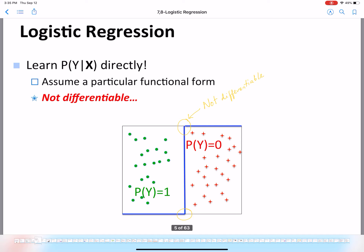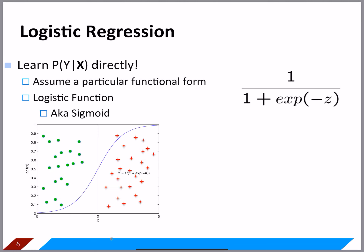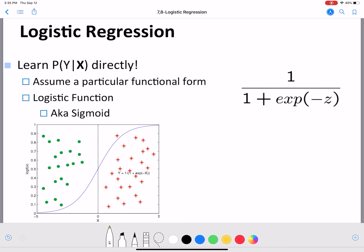Instead, we look to a very established, easy-to-use, and differentiable functional form known as the sigmoid function. The sigmoid function is how logistic regression gets its name. The logistic function or sigmoid function has the form 1 divided by 1 plus e to the power of minus z, and it has the characteristic S-shaped curve.